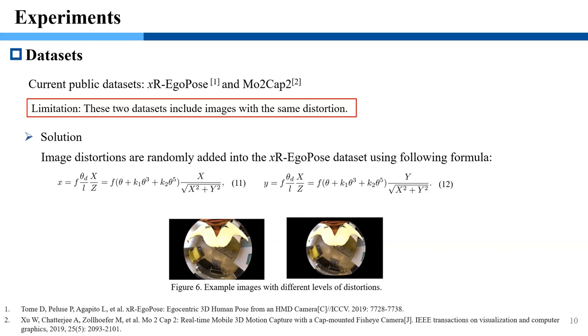There are two public datasets for evaluation. However, they include images with the same distortion, which cannot test the effectiveness of alleviating the impact of image distortions. Therefore, we synthetically add image distortions to xR-EgoPose dataset using equations 11 and 12. Figure 6 shows the example images with different levels of image distortions.